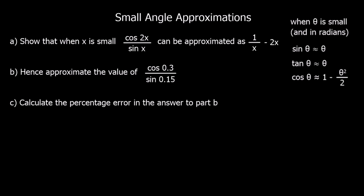In this video we're going to look at small angle approximations. When our angle is small and measured in radians — that's important, this only works in radians. If we have degrees, we have to convert to radians to do the approximation. So when theta is small and in radians: sin theta is approximately equal to theta, tan theta is approximately equal to theta as well, and cos theta is approximately equal to 1 minus theta squared over 2.